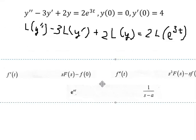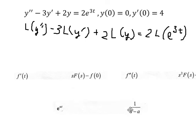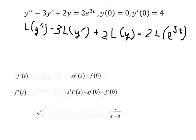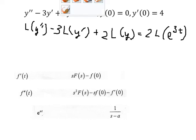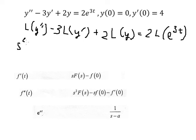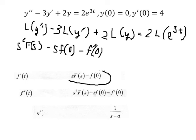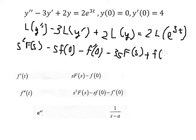Next we have the formulas here. We apply three formulas to do the Laplace transform. For the second derivative, we change it by this formula: s squared times capital F(s), minus s times f(0), minus the first derivative of the function at zero. The next term we transform gives us negative 3h times capital F(s), plus f(0).